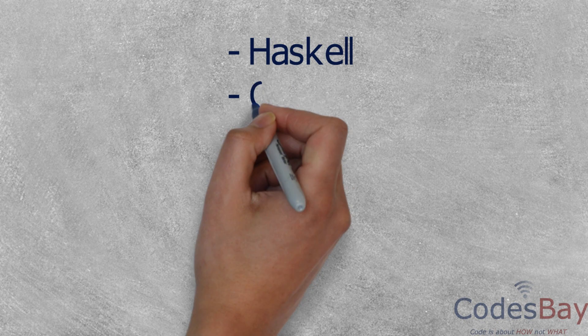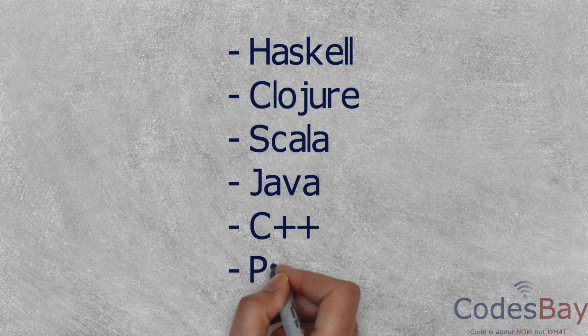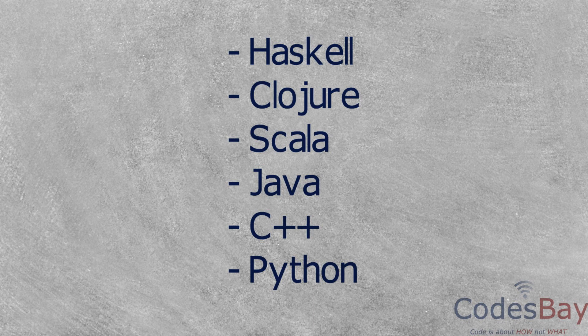Some of the well-known functional programming languages out there are Haskell, Clojure, Scala and oldies like Java, C++ and Python also support functional programming constructs as of today.